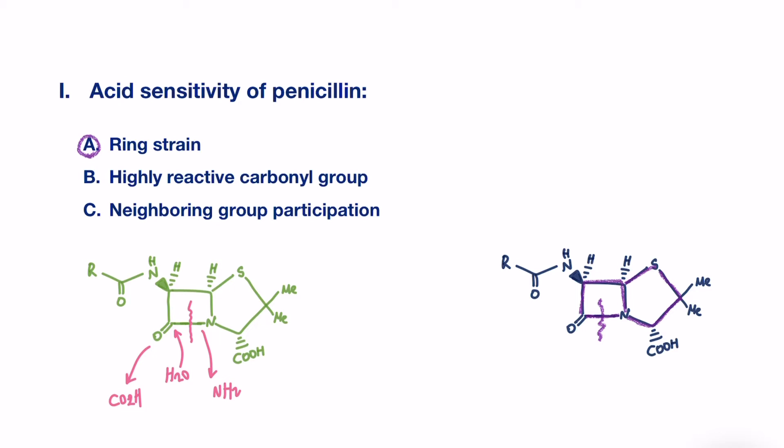Secondly, the highly reactive carbonyl group. The carbonyl group in the beta-lactam ring is highly susceptible to nucleophile attack. This is because in regular amide structure, the pair of electrons on the nitrogen are distributed to form a resonance structure, as seen, that stabilizes the carbonyl group by making the carbonyl carbon less electron deficient.